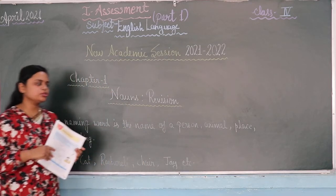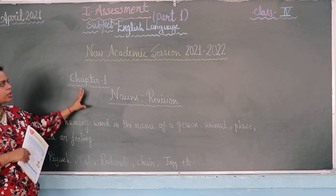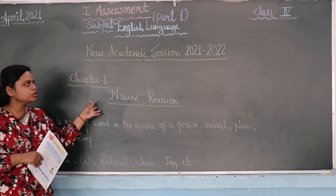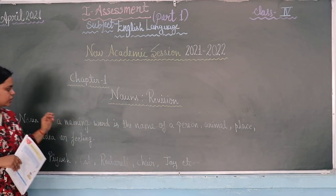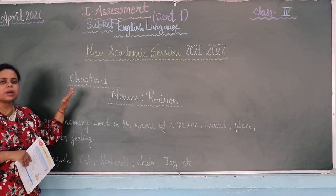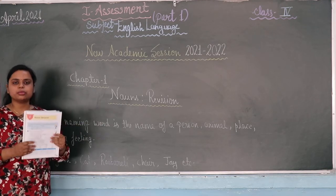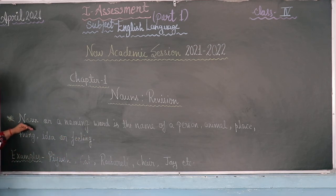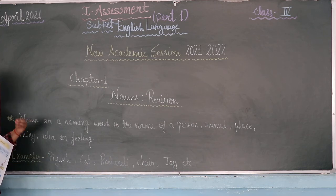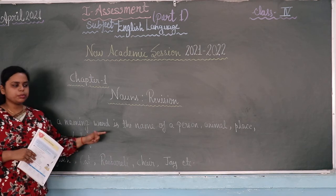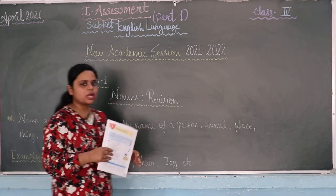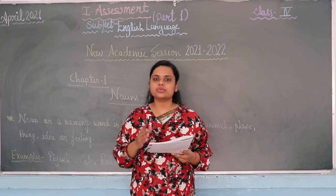Hopefully, for this first online class of the new academic session, this is your first chapter — Nouns — with a short but brief explanation about the chapter. I hope you understood the complete chapter. While watching this video, open your book to page number 13, chapter 1 Nouns Revision, read the definition and examples, and you have to learn this definition and examples — what is the noun, what are the examples of noun: person, place, things, idea or feeling. Hopefully in the next video we are going to cover all the book exercises with the written work of your notebook. Thank you.